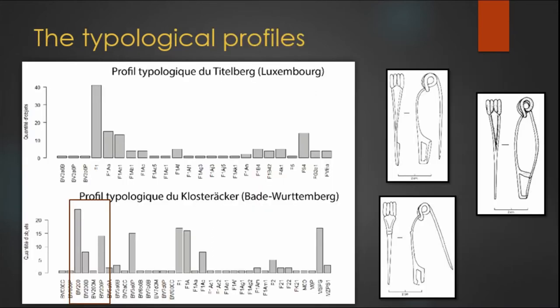The typological profiles are the main elements of these methods because they are the starting point for statistical comparison and their grouping. As I already said, it is a kind of a barcode or a fingerprint illustrating the typological composition of a site or a region.